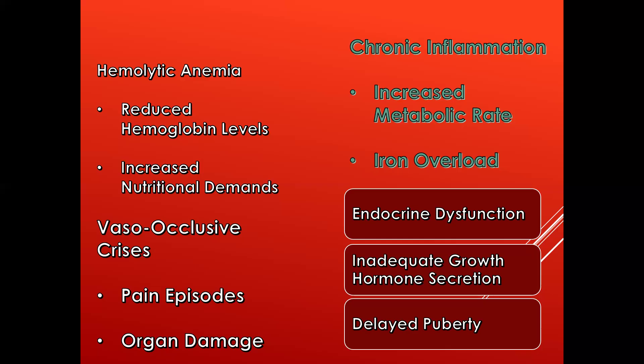Another way sickle cell disease can lead to poor growth and development is by directly acting on the endocrine gland through inadequate growth hormone secretion. As the child continues to suffer from this condition, there may be growth hormone deficiencies because the overall body is already affected. The child may not grow very well and may also have delayed puberty because of the effects of sickle cell disease along the hypothalamic-pituitary-gonadal axis and growth hormones. As the body is focused on trying to produce red blood cells, many other body functions are delayed, including puberty.